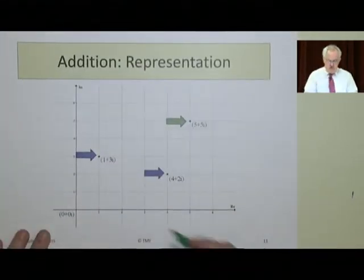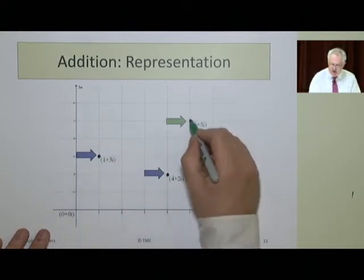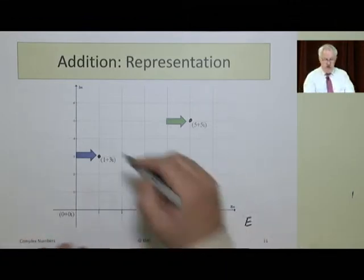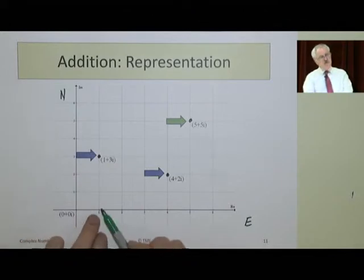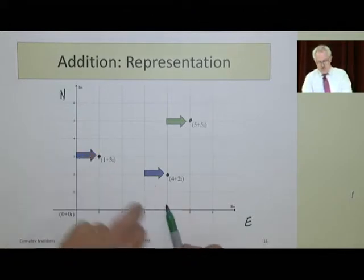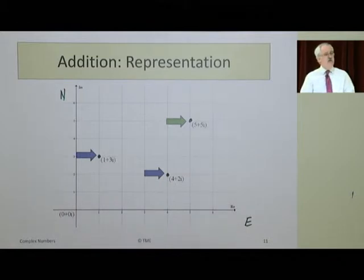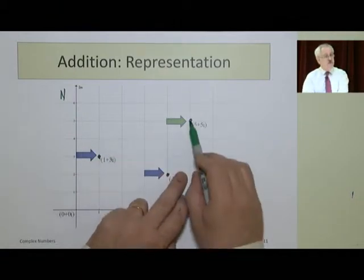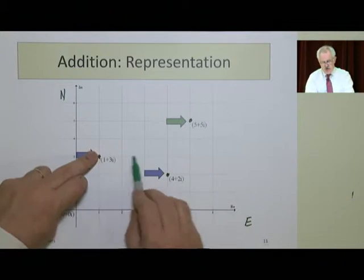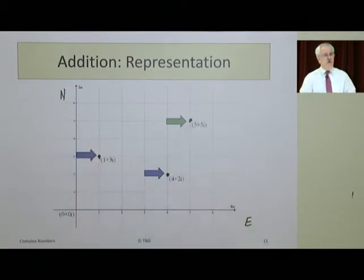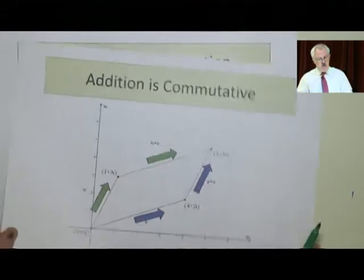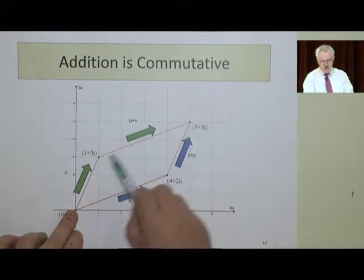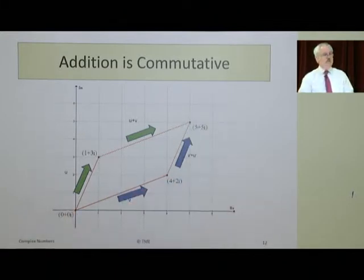Drawing this on a graph, here's 1 plus 3i, 4 plus 2i, and 5 plus 5i. We can imagine this in terms of east and north if we wished. One step east and 3 north, 4 steps east and 2 north. If we added the two together from this point, we decided to add this number, 1 east and 3 north, we'd end up here. Or from this point, if we went 4 east and 2 north, we'd end up there. So we can see that addition in complex numbers is commutative. We can go this plus this or this plus this. Add them in any direction, we end up in the same place.